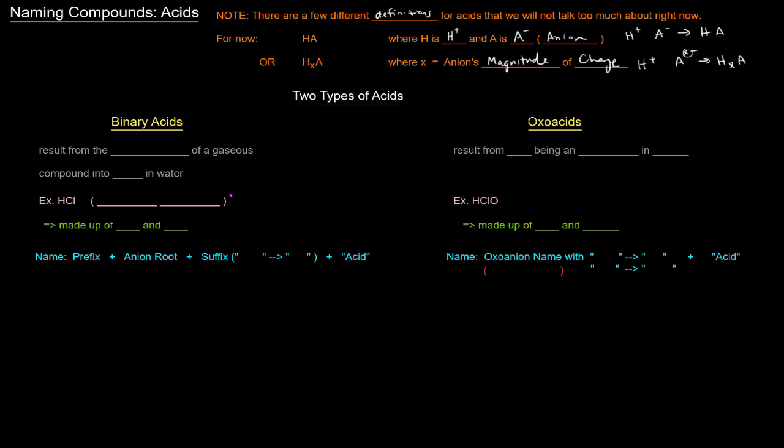So there are two types of acids that we'll be talking about, and they are binary acids and oxoacids. So a binary acid resulted from the dissolution, or the dissolving, of a gaseous compound into ions in water.